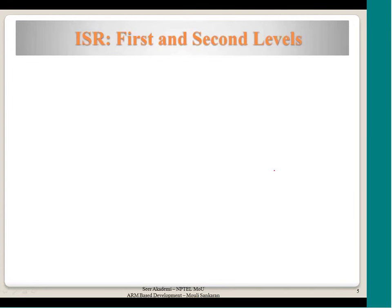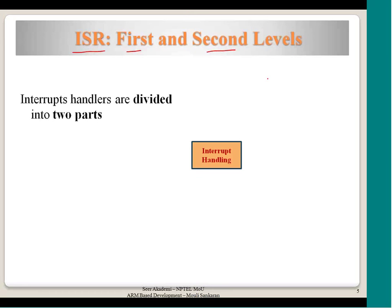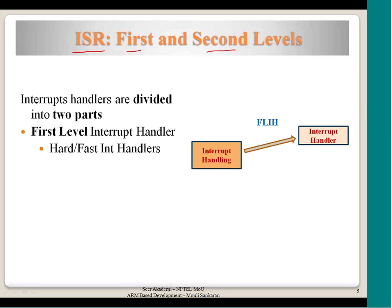Interrupt service routines (ISRs) normally have two levels of handling. The interrupt handlers are divided into two parts: first level and second level. After the interrupt has been recognized and it has been determined which device is interrupting, there are two levels of handling based on the device and the data coming into the processor. The first handler is called a hard and fast interrupt handler.